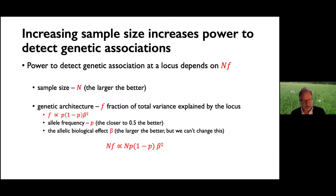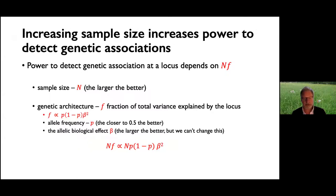Sharing data for genetic association analysis in this way means the power to detect associations is improved. One could thereby discover associations of genetic variants that would be impossible to detect if each dataset were analysed individually. The key reason is that combining studies increases the sample size, and the power to detect genetic association at a locus depends on the sample size multiplied by the fraction of variance explained by variation at that locus. This in turn depends on the frequency of the allele and its underlying biological effect. In general, the closer the allele frequency is to a half, the greater the power. While we can't change the biological effect of an allele, we can change its frequency by combining studies.